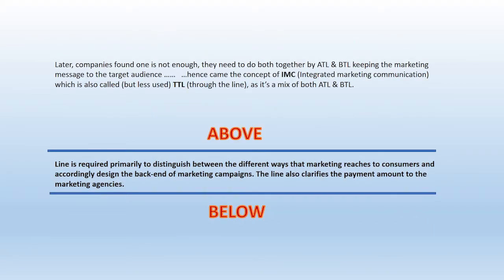So anything above the line is called ATL and anything below the line is called BTL. Later, companies found out one is not enough and they started to use a combination of both, which is called either IMC integrated marketing communication or sometimes TTL, which is through the line. The line is required primarily to distinguish between the different ways that marketing reaches to consumers and accordingly design the back end of marketing campaigns. The line also clarifies the payment amount to the marketing agencies.